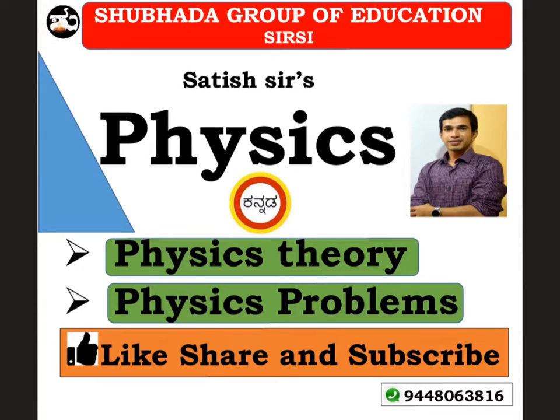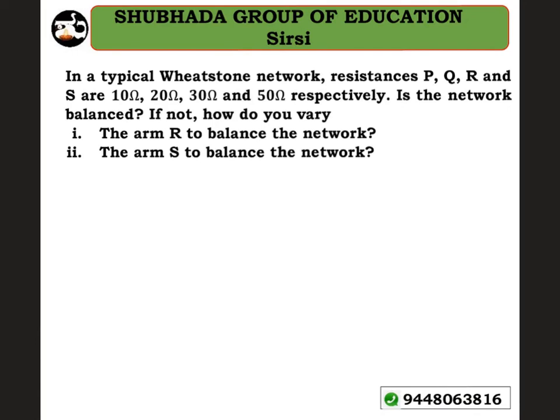Hi guys, welcome to my channel Shubhada Group of Education. You are watching physics videos. Look at the next problem: In a typical Wheatstone network, resistances P, Q, R, and S are 10Ω, 20Ω, 30Ω, and 50Ω respectively. Is the Wheatstone bridge or network balanced? If not, how do you vary the arm R to balance the network, and arm S to balance the network?